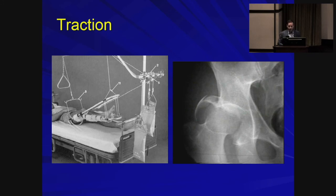After reduction of a fracture-dislocation, consider whether to place the patient in traction — a judgment call if the pattern looks unstable and the patient may re-dislocate before surgery. You can also range the patient after closed reduction to about 60–70 degrees; if you feel it re-dislocate or sense instability, the patient should be placed in traction.